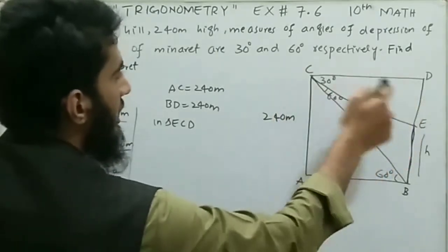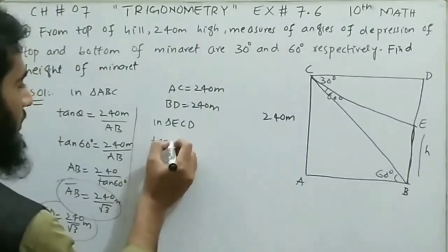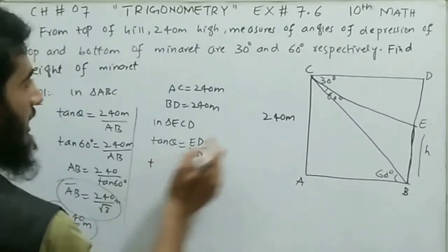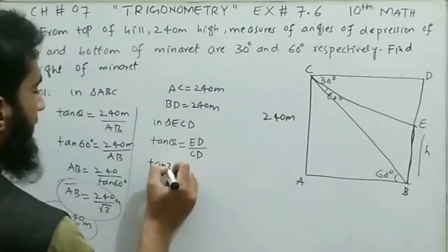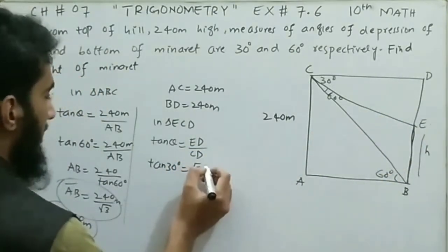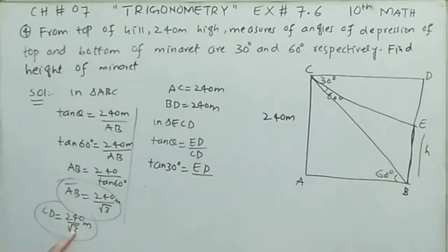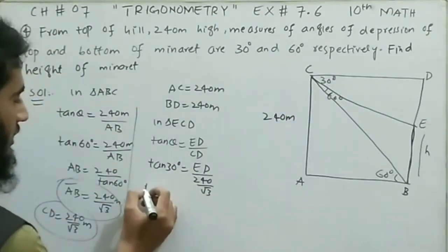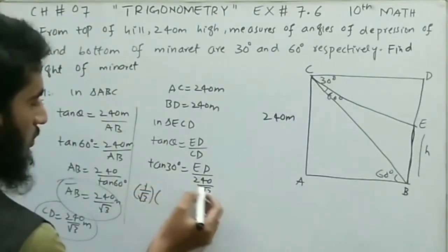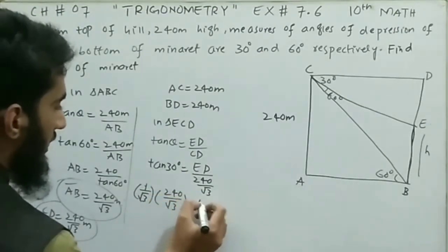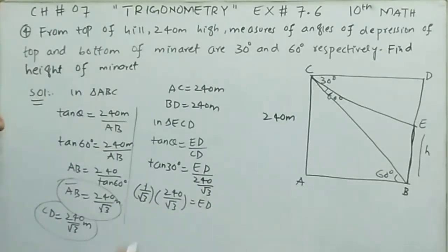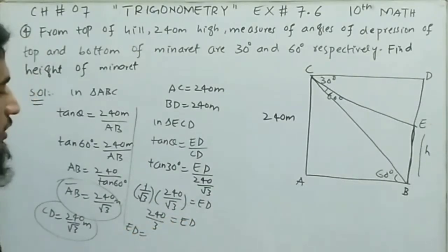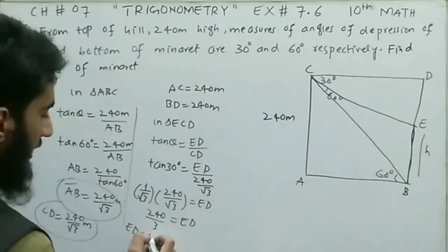In triangle ECD, tangent theta equals perpendicular ED divided by base CD. The angle here is 30 degrees, so tangent 30 equals ED divided by (240/√3). Tangent 30 equals 1/√3. So ED equals (1/√3) × (240/√3) = 240/3 = 80 meters. So ED equals 80 meters.